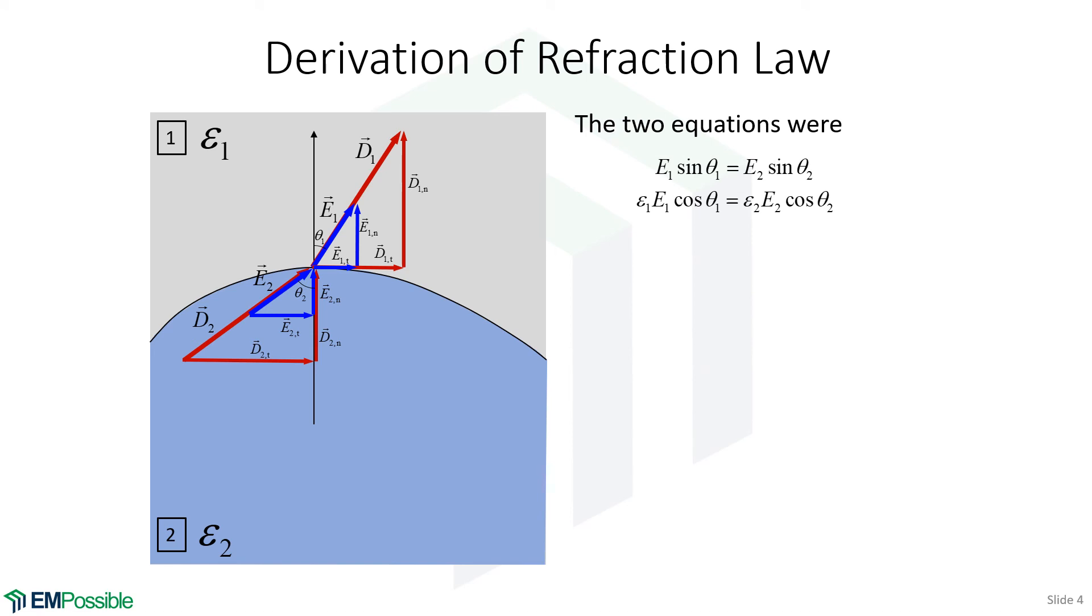So here's the two equations from the previous slide. Let's divide them. What we see on the left, the E1s will cancel, and on the right, the E2s will cancel.